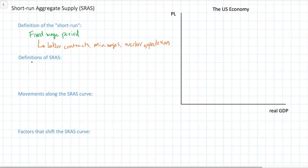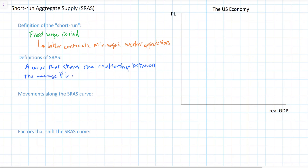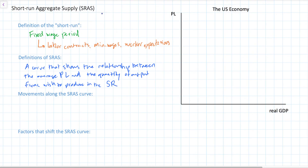Now let's move on to our definition of short-run aggregate supply. The short-run aggregate supply in a nation is a curve that illustrates the relationship between the average price level of goods and services in a country and the quantity of total output that businesses will wish to produce at a range of price levels — in other words, in the fixed wage period.